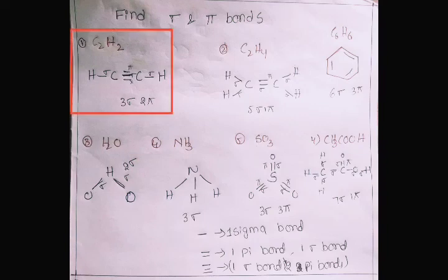First structure is C2H2. This is the structure — a triple bond between the two carbons. H–C≡C–H: counting gives three sigma bonds (H–C, C–C, C–H) and two pi bonds in the triple bond. So C2H2 has three sigma bonds and two pi bonds.